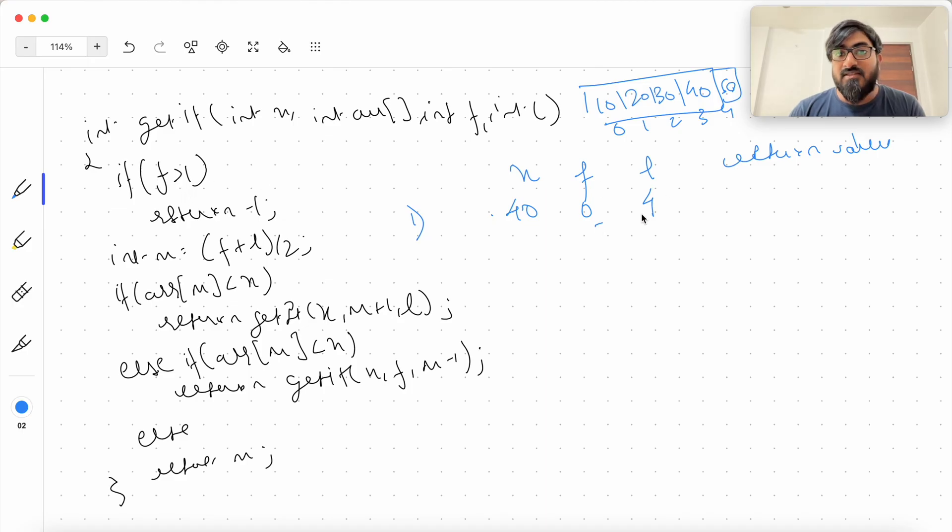F is greater than L is false. So you come here, you calculate M. M is F plus L by 2. So 0 plus 4 by 2, it is going to give you 2. Arr of M is less than X. Arr of M which is 30. 30 is less than X. True. So this is the first recursive call. When you call here, you pass X as it is. Your front is M plus 1 which is 3. Your L is 4 as it is. And then we do this again. F is greater than L, false. So whatever this returns is the return value from here.